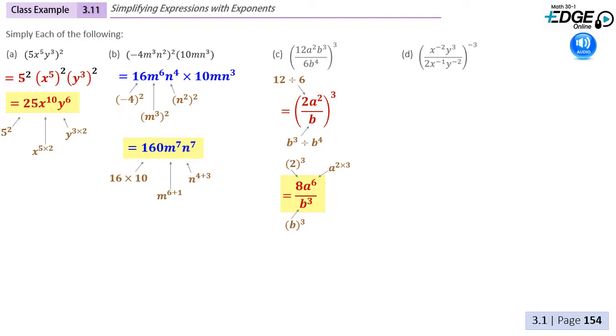Now we have 2a squared over b in brackets to the power of 3. Here, we multiply the exponent on the a by 3, and on the b by 3, and the invisible exponent of 1 that is on our 2 by 3, cubing it to make 8.